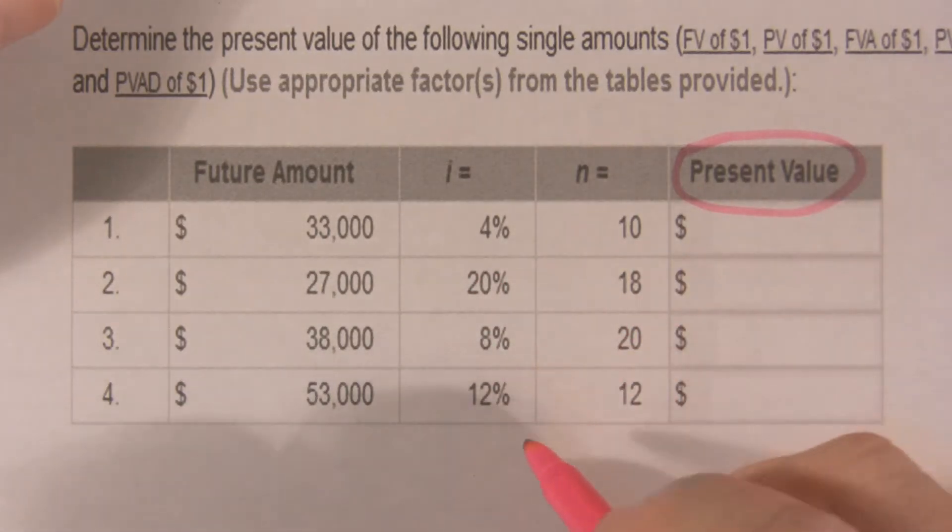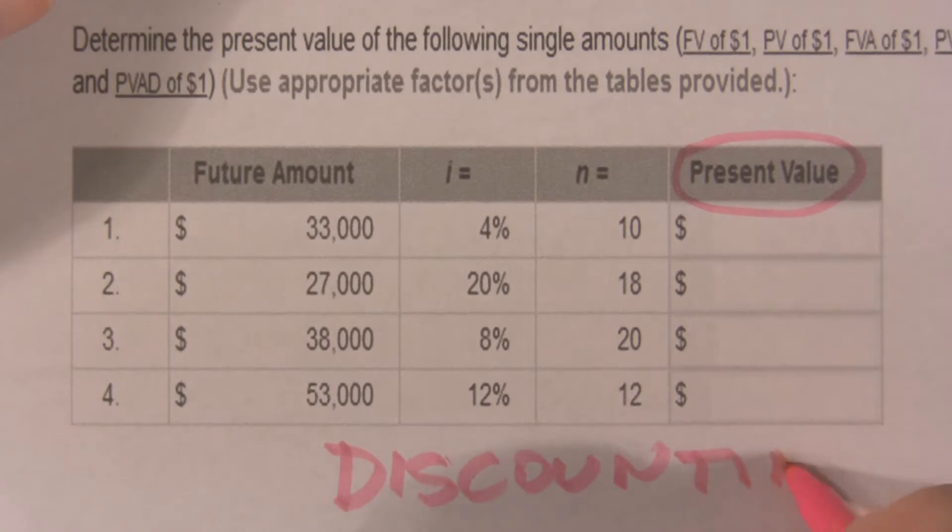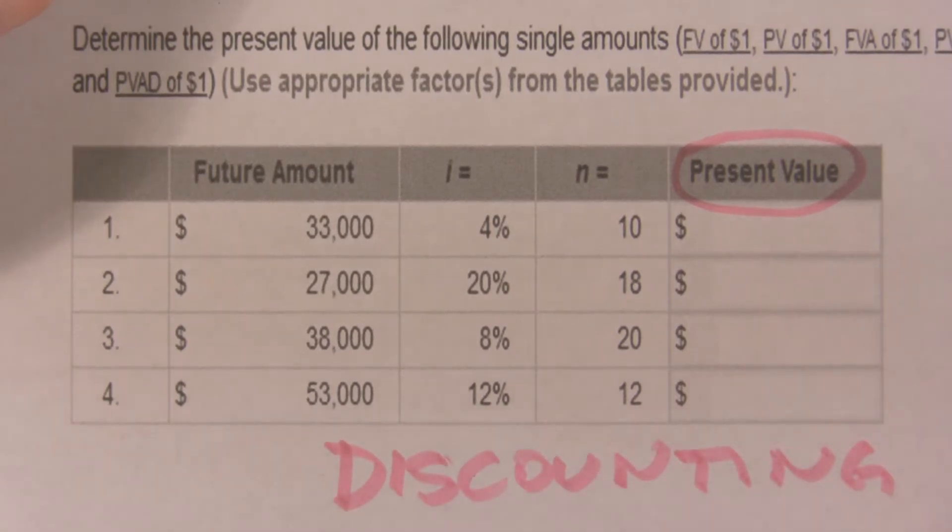Present value is called discounting. So that's what we're doing, we're discounting. So if you do something and you end up with a present value that's larger than the future value, you did something wrong.